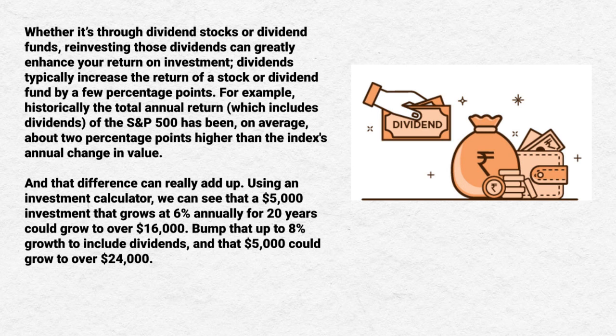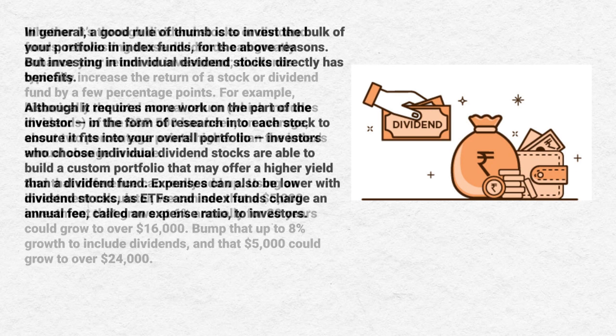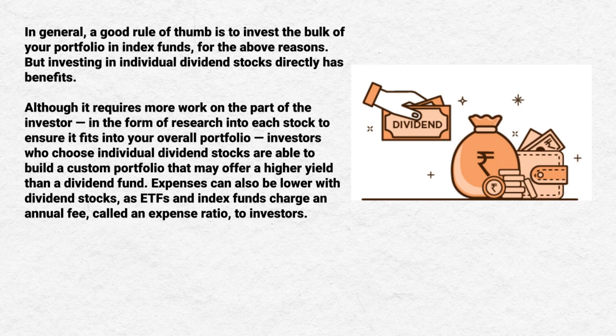Using an investment calculator, we can see that a five-thousand-dollar investment that grows at six percent annually for 20 years could grow to over sixteen thousand dollars. Bump that up to eight percent growth to include dividends, and that five thousand dollars could grow to over twenty-four thousand dollars. In general, a good rule of thumb is to invest the bulk of your portfolio in index funds.